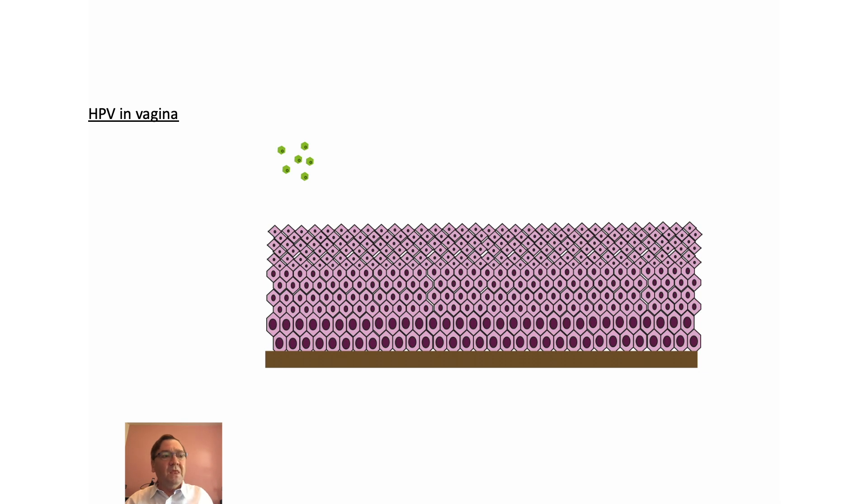I've talked about this process in another video more simplistically. But at a cellular level, you need to have a microfracture in the epithelium so that the virus can reach the basement membrane.